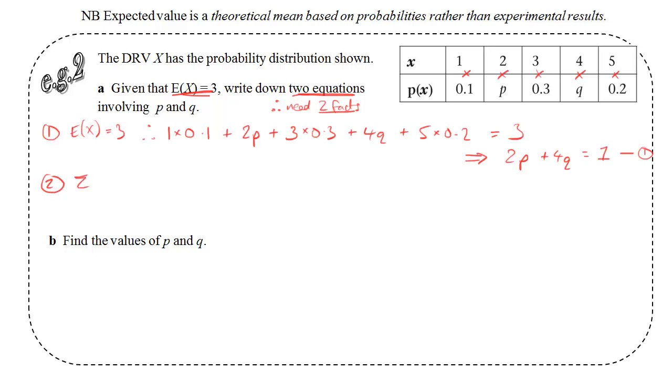The second fact that I've got that I can use is one that I can always use, that the probabilities add up to 1. So I simply add up the five values for my probabilities, and I can write equals 1. Then I can tidy that equation up as well. So I'll end up with p plus q equals 0.4, and I'll call that equation 2.